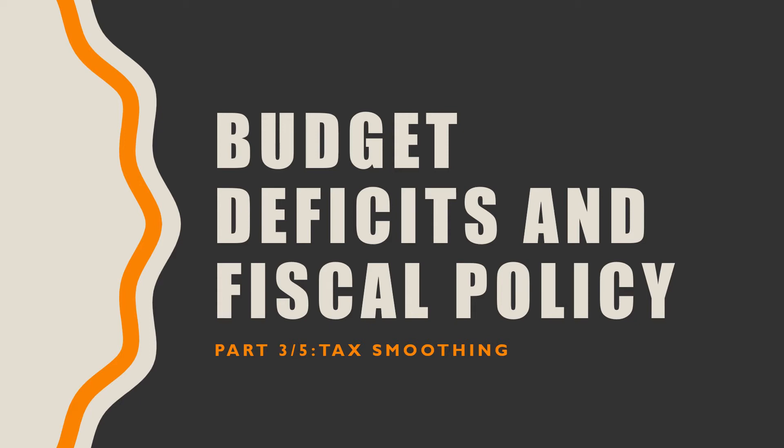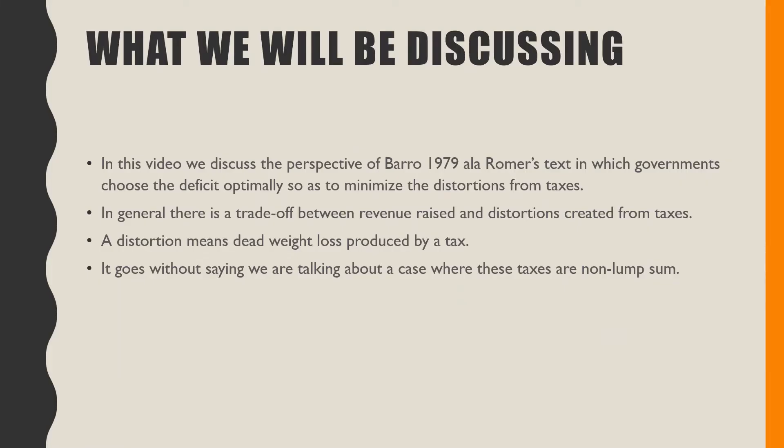Welcome back to our series on budget deficits and fiscal policy. In this video we're going to talk about tax smoothing, discussing the perspective of Barro 1979 through Romer's text, in which governments choose deficits optimally so as to minimize the distortion from taxes. In general, there is a trade-off between the revenue raised and the distortion created from taxes.